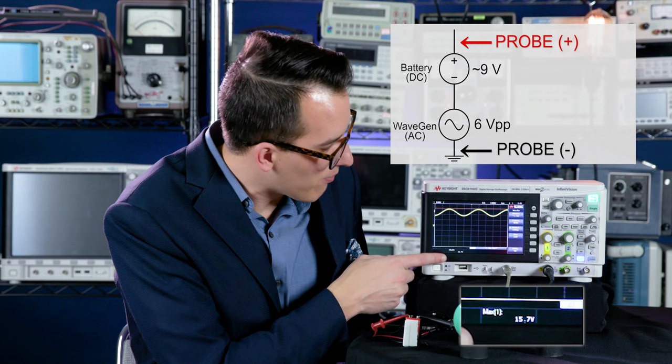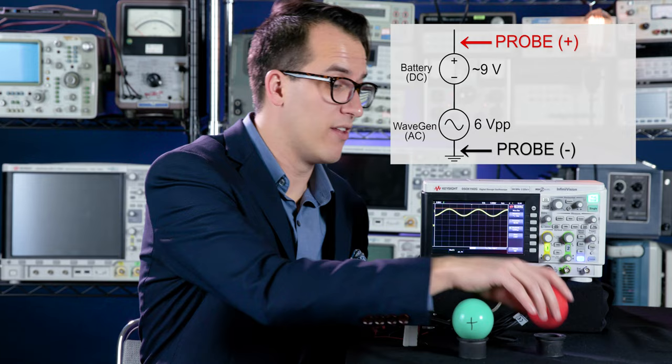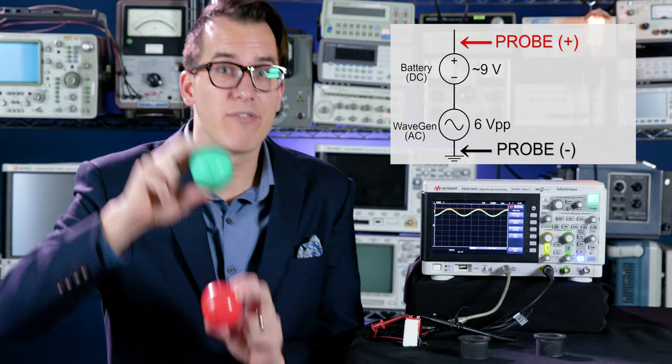The potential difference between the leads on my battery is still 9 volts, so there's still a constant potential energy out of my battery, but I'm now wavering with respect to the waveform generator's output.